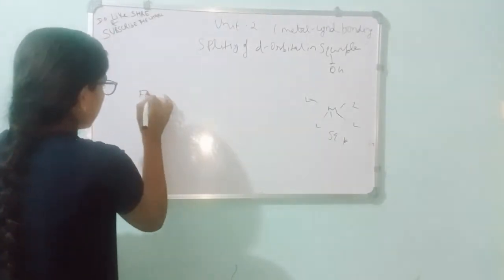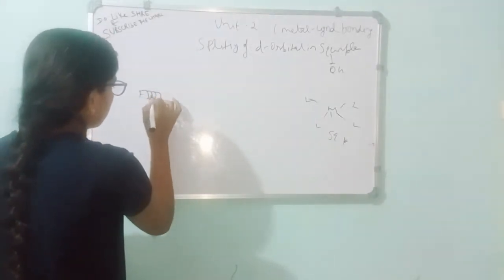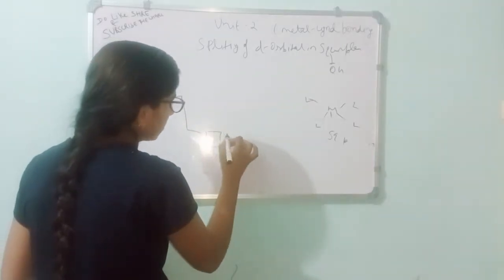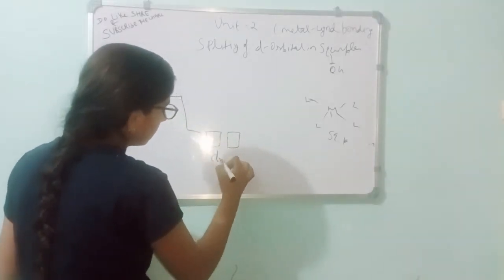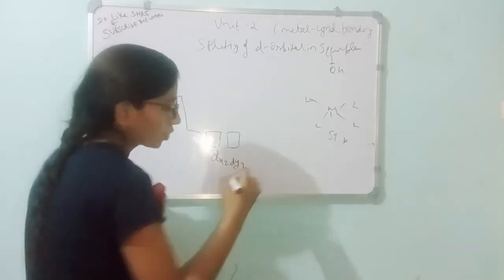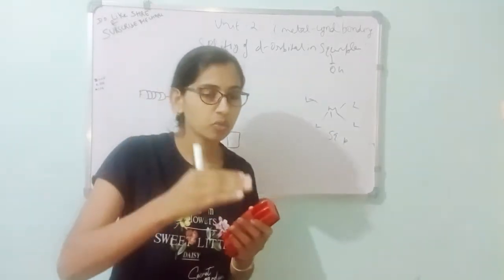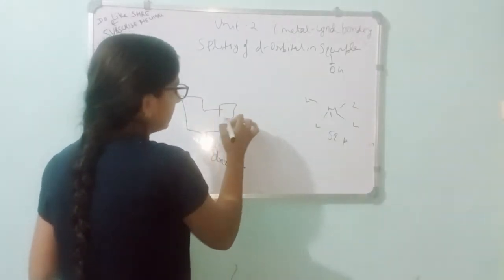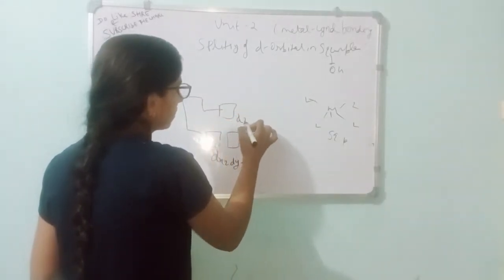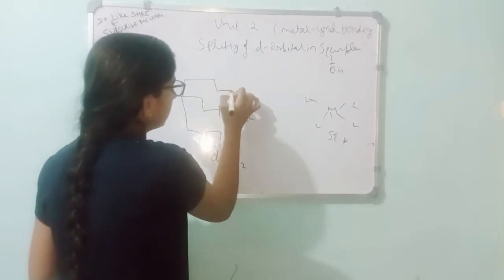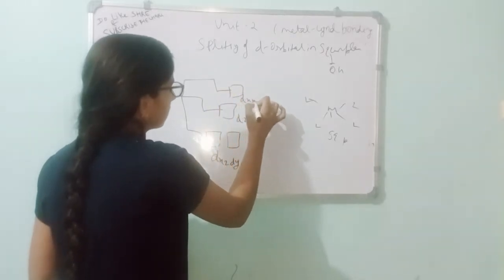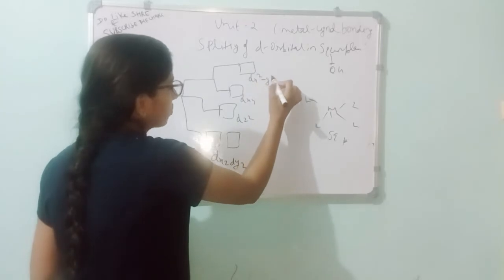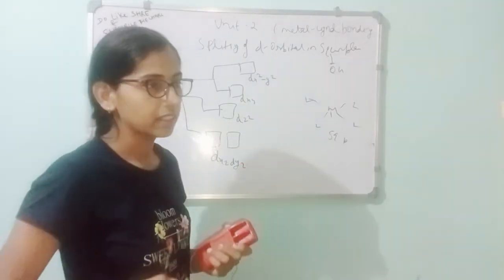Let's look at what happens to the five degenerate d orbitals — 1, 2, 3, 4, 5. When splitting occurs, at the lower end the z-type orbitals have reduced energy. The order from bottom to top is: dxz and dyz, then dz squared, then dxy, and finally dx squared minus y squared at the highest energy.